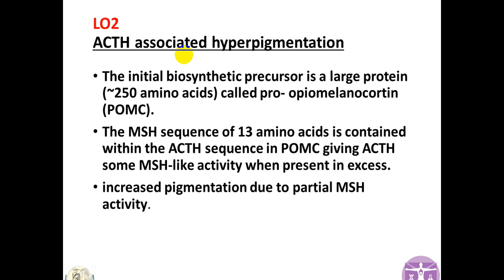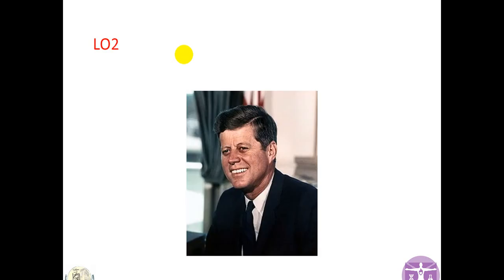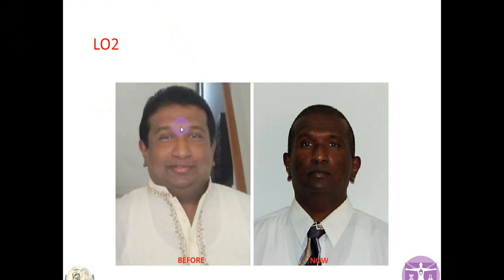Patients with very high levels of ACTH are usually hyperpigmented. This is a picture of former US president John Kennedy, who had Addison's disease — you can see his hyperpigmentation. And here is a picture of another patient with Addison's disease showing very high ACTH levels. You can see his picture before he became Addisonian and then after developing Addison's disease, when his skin color has darkened.